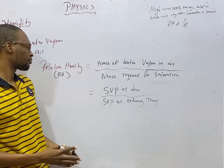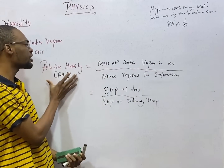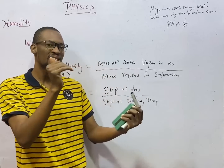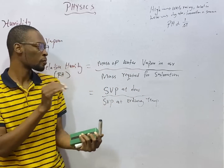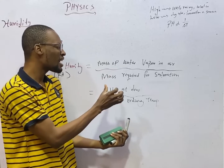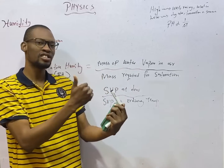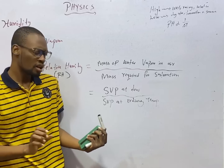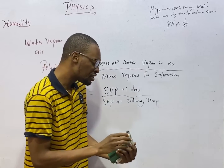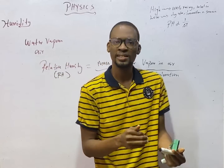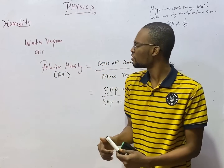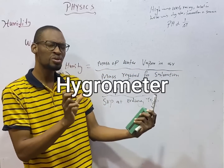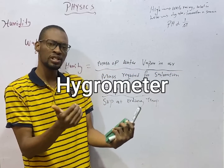Mathematically, relative humidity is the mass of water vapor present in air over the mass that is required for saturation. Relative humidity is measured using an instrument referred to as a hygrometer. A hygrometer is used to measure relative humidity.